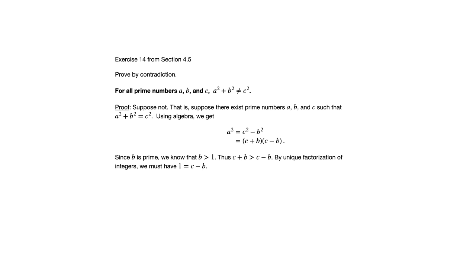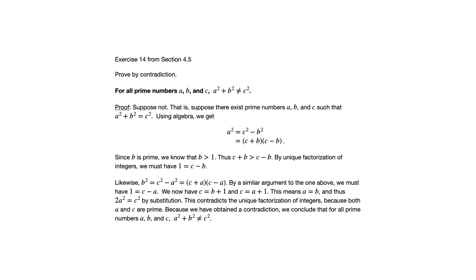Now, we could have taken that original equation, that a squared plus b squared equals c squared. We could have solved it for b squared instead and said b squared equals c squared minus a squared. So if we repeat that same argument, but starting with b squared equals c squared minus a squared, then we could also conclude that one equals c minus a. And that tells us that solving for c, we have c equals b plus one, and also c equals a plus one. So a and b must be equal.